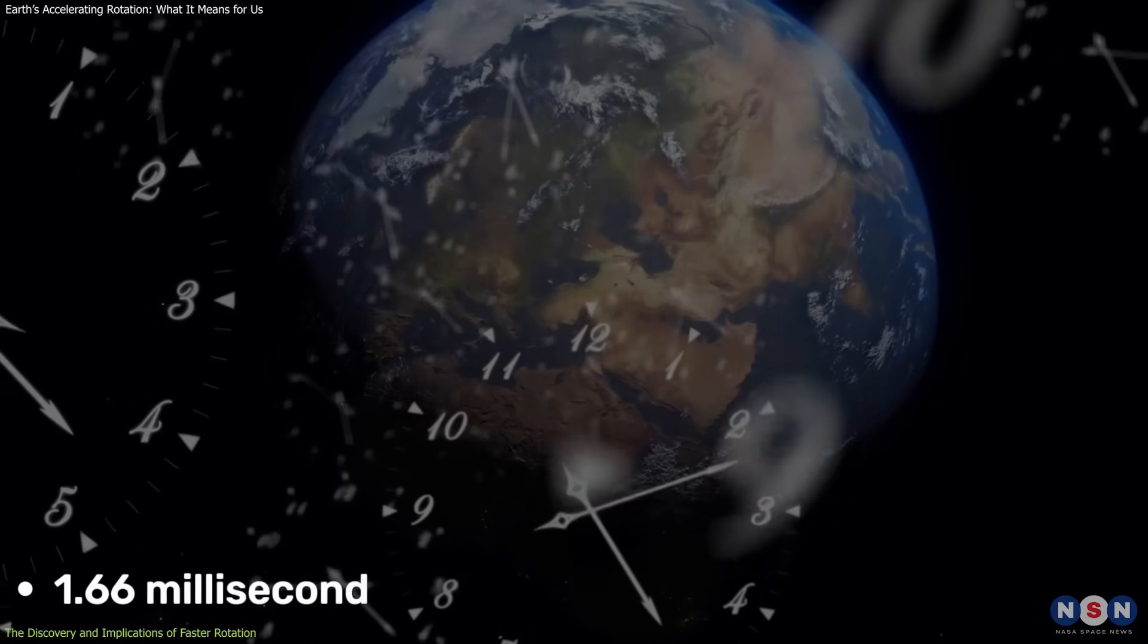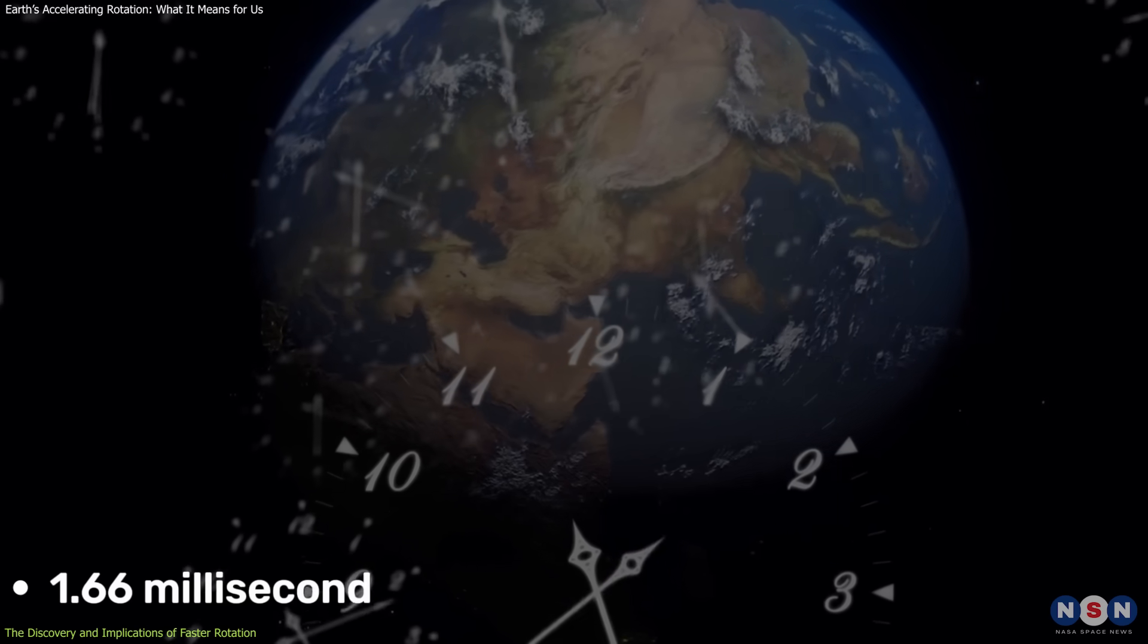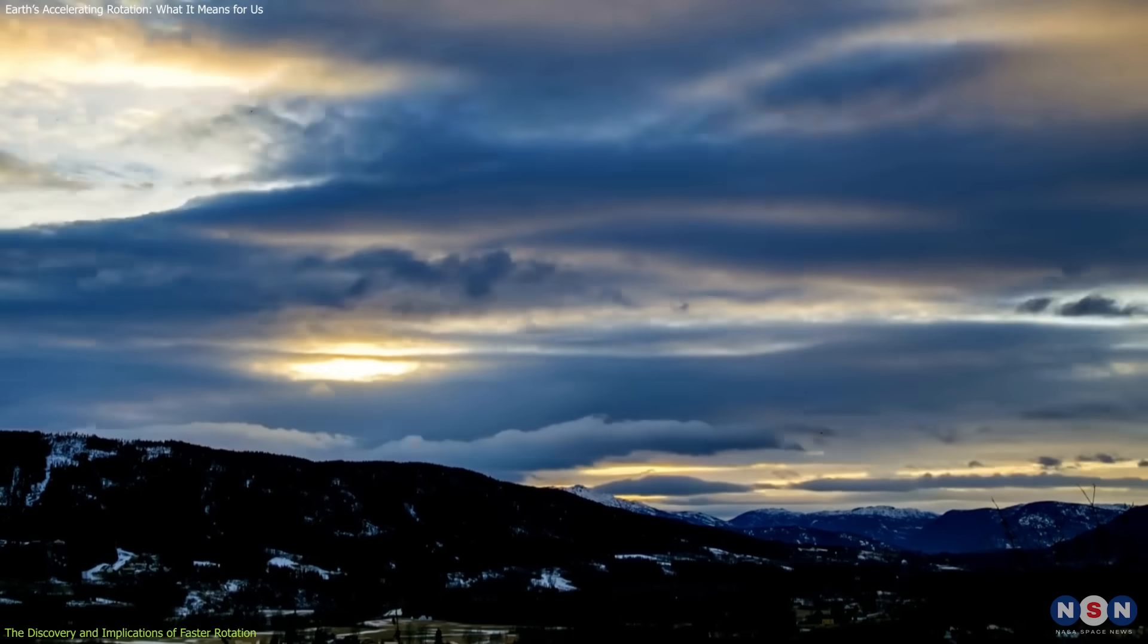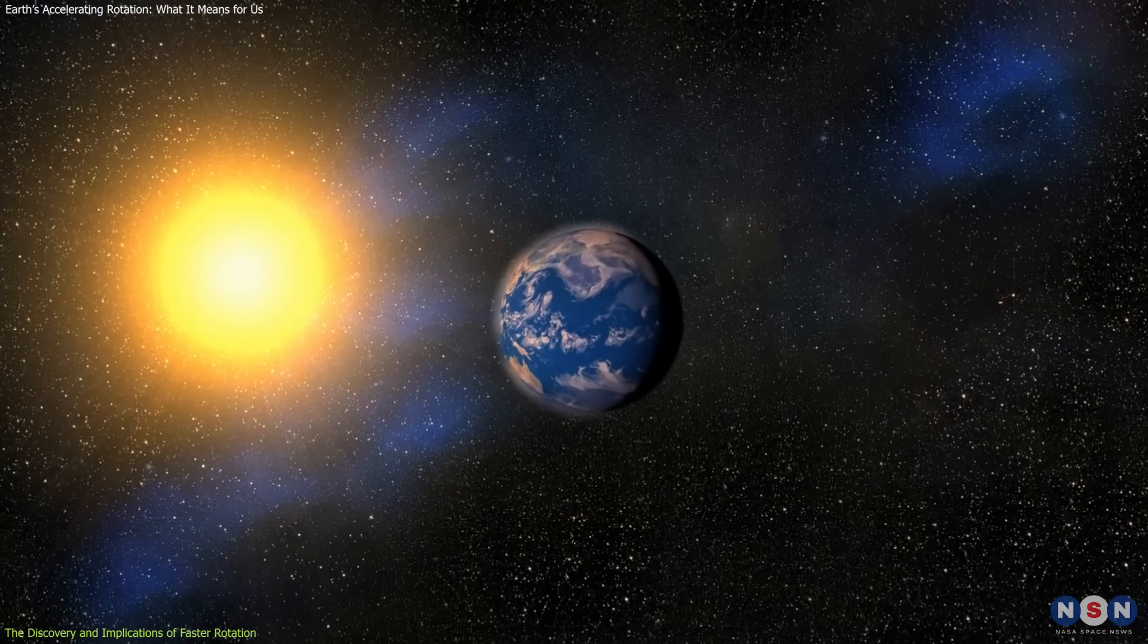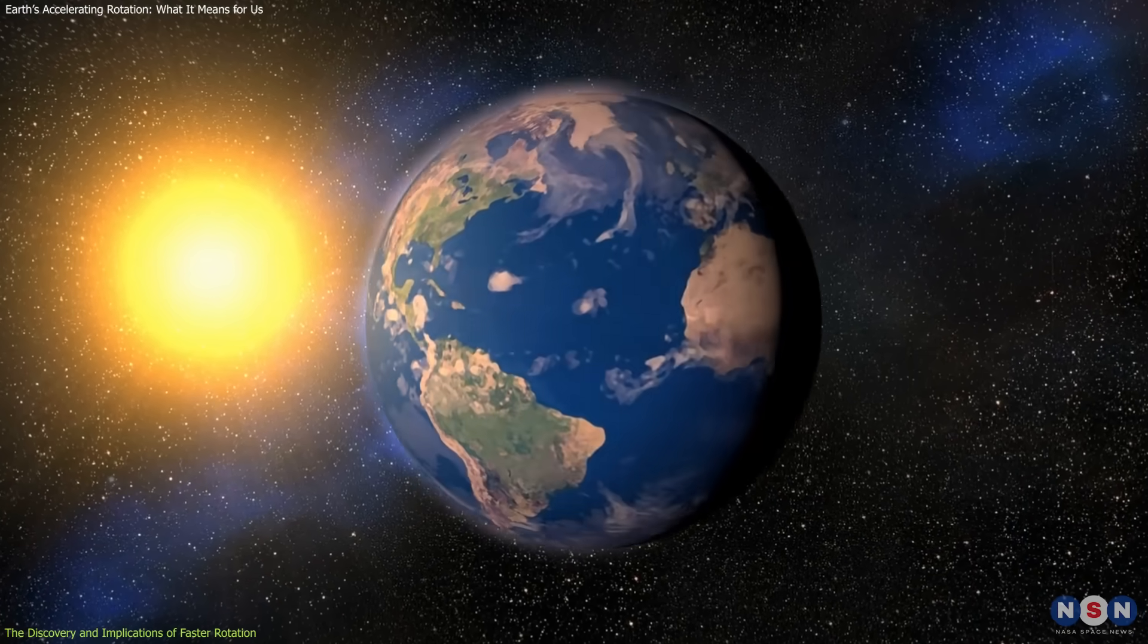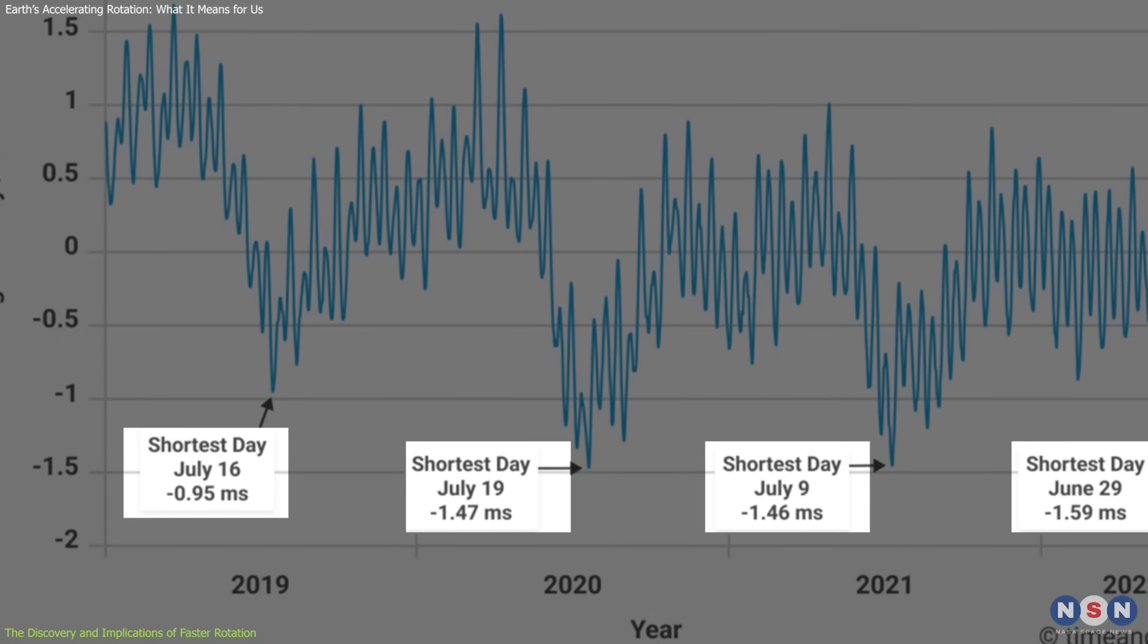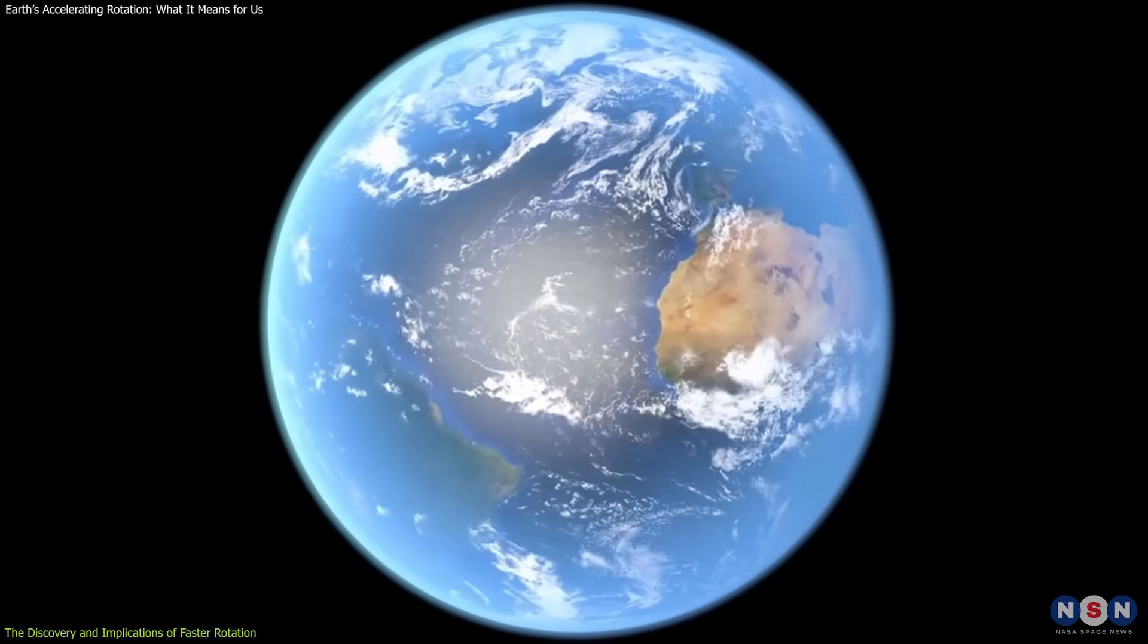At 1.66 milliseconds shorter than the standard 24 hours, this was the shortest day ever recorded, which has raised questions about the future behavior of Earth's rotation. While these small time discrepancies might seem insignificant, they signal a shift in Earth's rotational patterns.